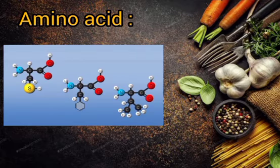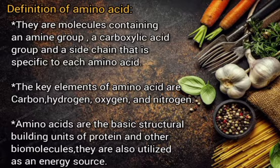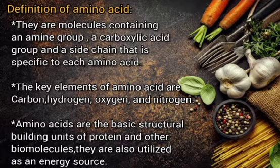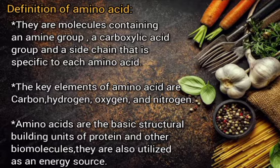Amino acids: they are molecules containing an amine group, a carboxylic acid group, and a side chain that is specific to each amino acid. The key elements of amino acids are carbon, hydrogen, oxygen, and nitrogen. Amino acids are the basic structural building units of protein and other biomolecules. They are also utilized as an energy source.